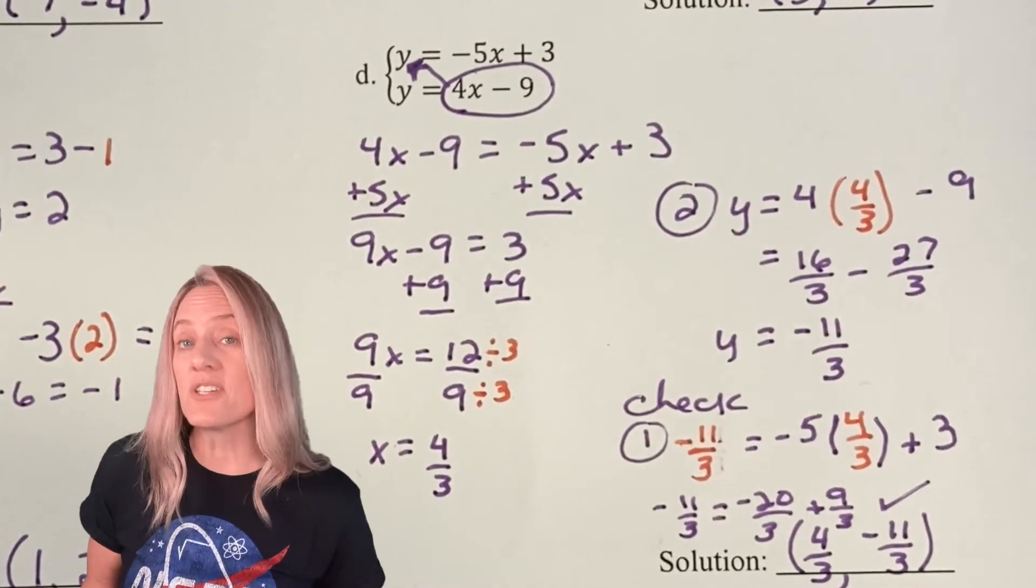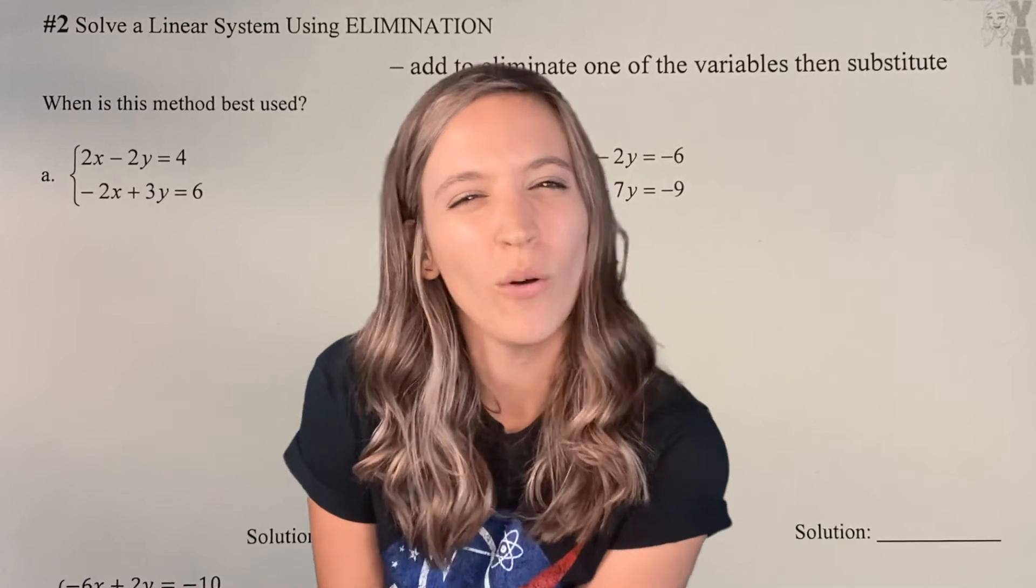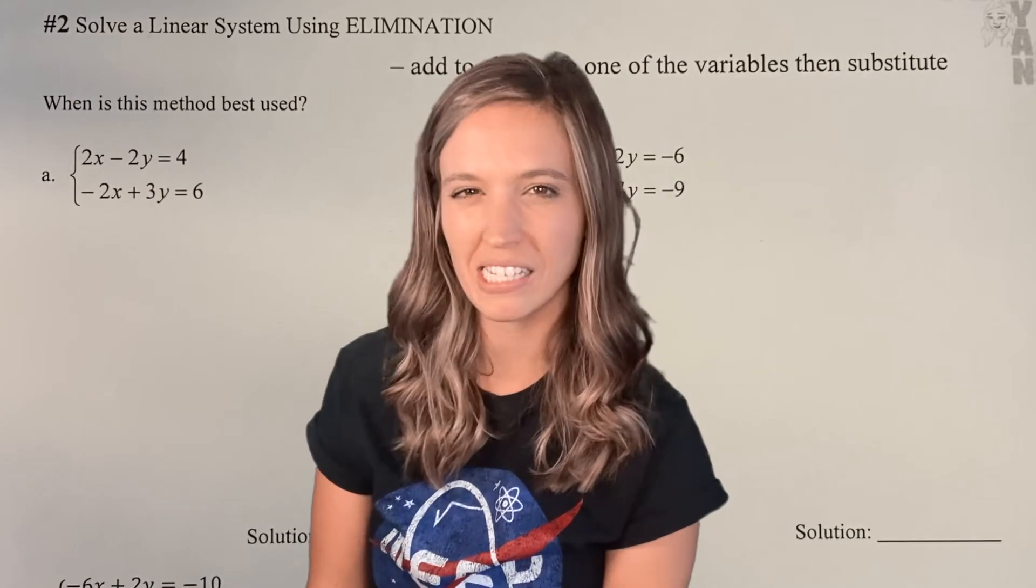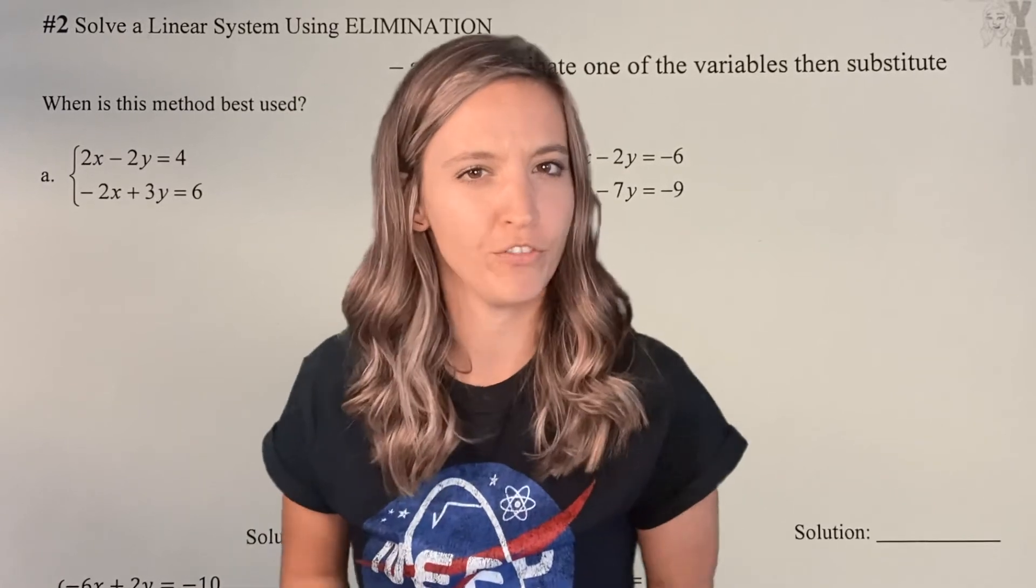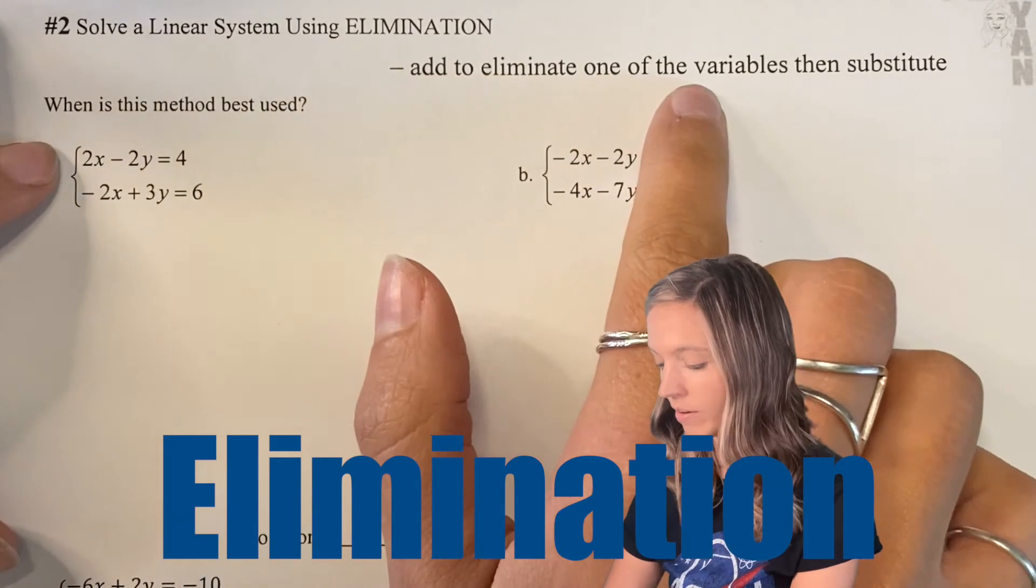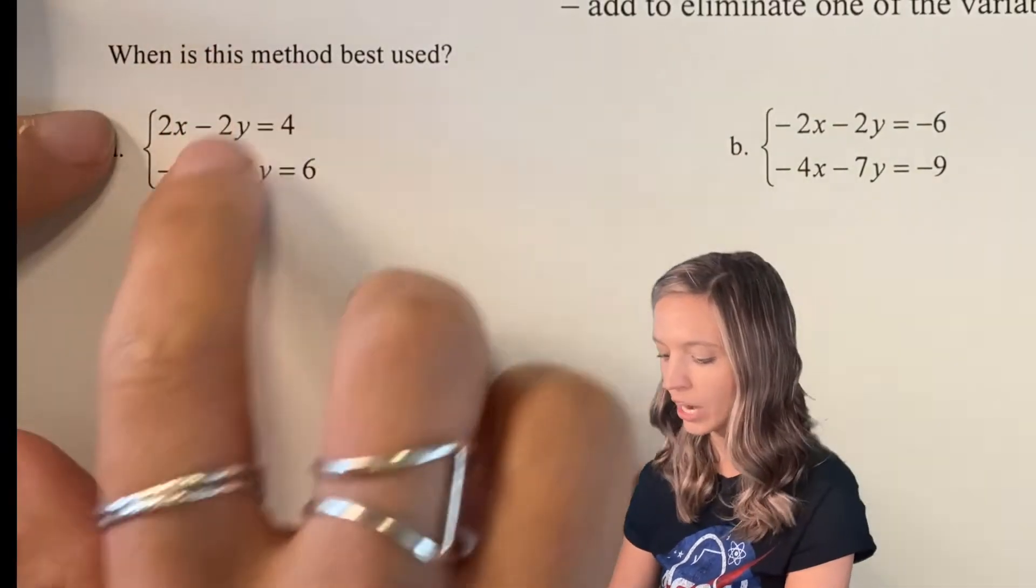That's substitution. Let's take a look at elimination. Now, when we don't always have an x or a y that has a coefficient of 1 so it's easily isolated, it's nice to have another method to fall back on, like elimination. For elimination, we add to eliminate one of the variables and then substitute it in to find the other variable.